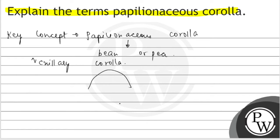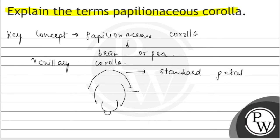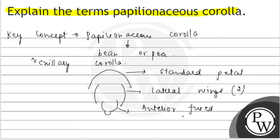So this is the big petal below, and two other petals are the lateral wings. This is basically the structure of Papilionaceae corolla. It is called the standard petal, which is on the side of the lateral wings. The lateral wings are two in number, and the two anterior fused petals are also two in number — this is also known as the keel.